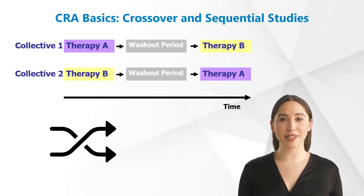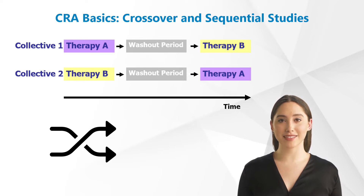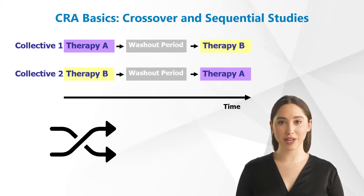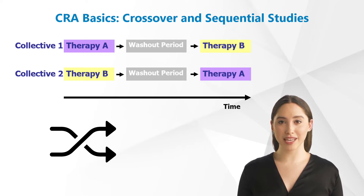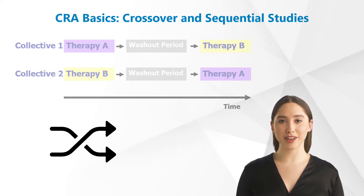It is important that the order of therapies rotates across the subject groups. Otherwise, apparent causality could occur. For example, if only collective one was investigated and therapy A was effective with a long time delay whereas therapy B was ineffective, possibly the success of the therapy in collective one would mistakenly be attributed to therapy B.